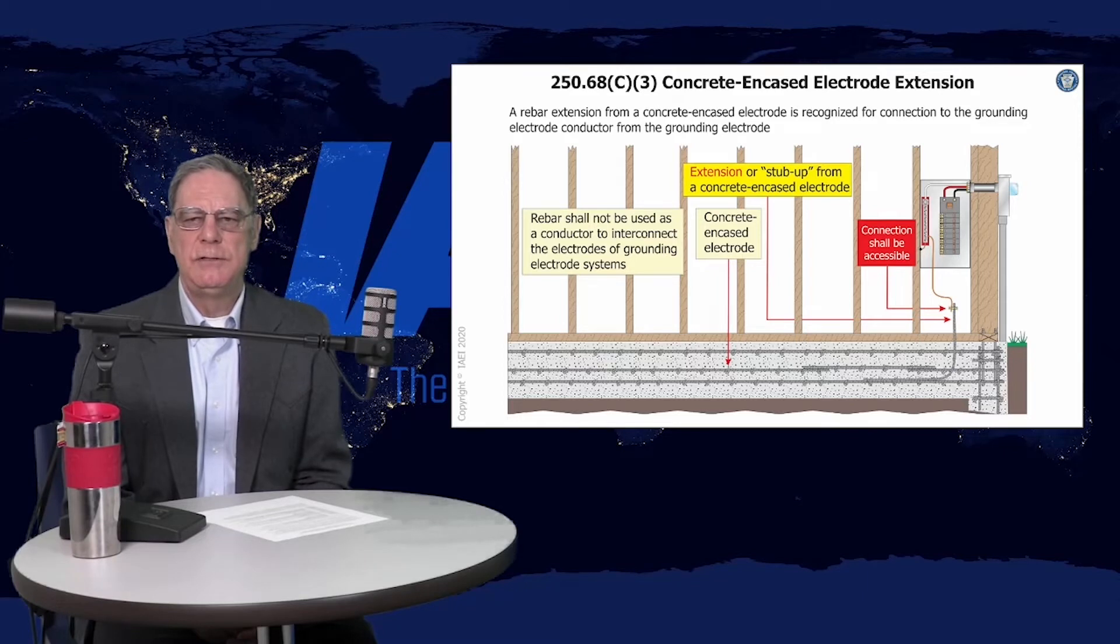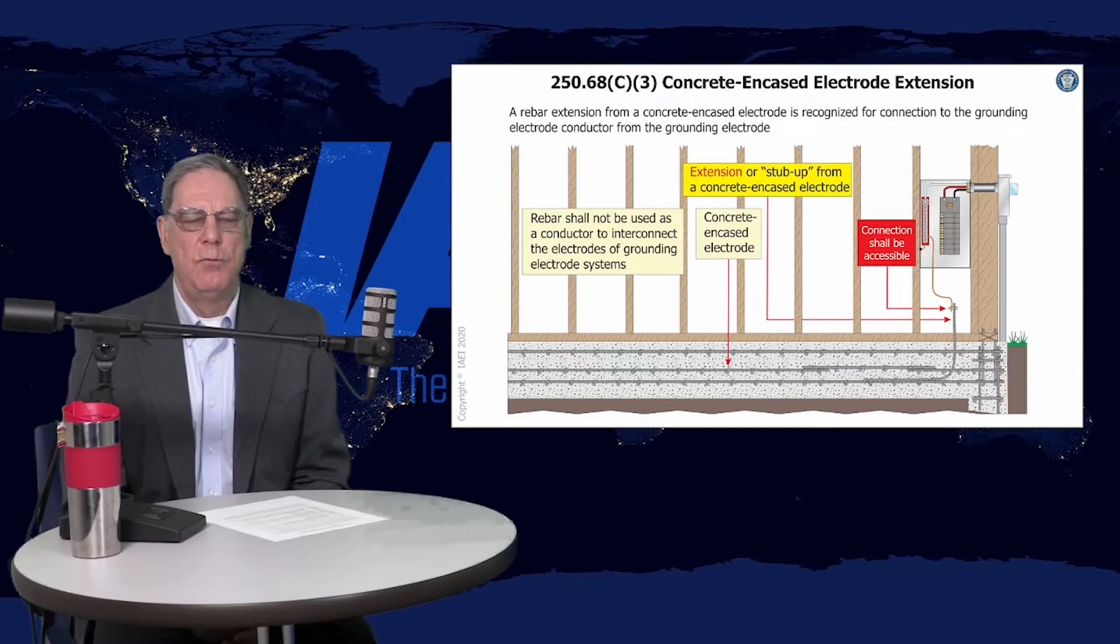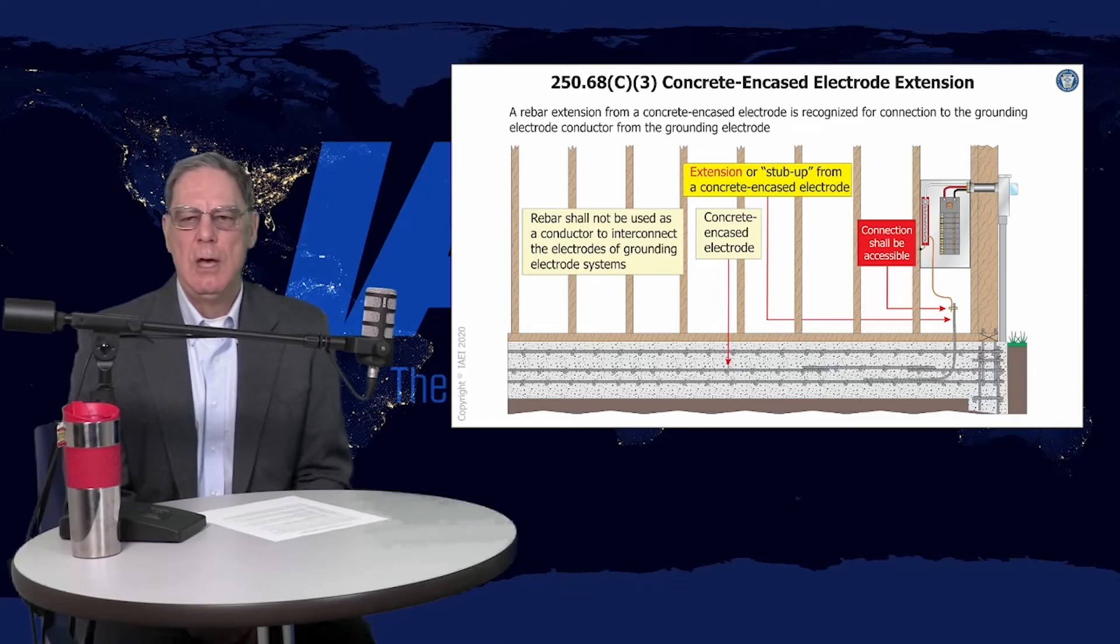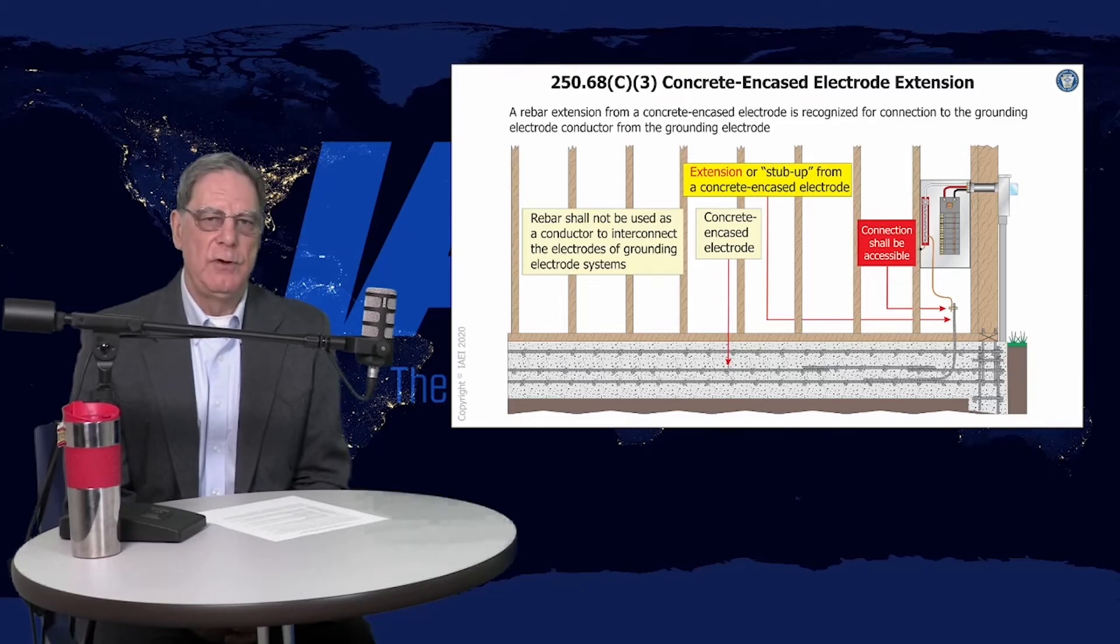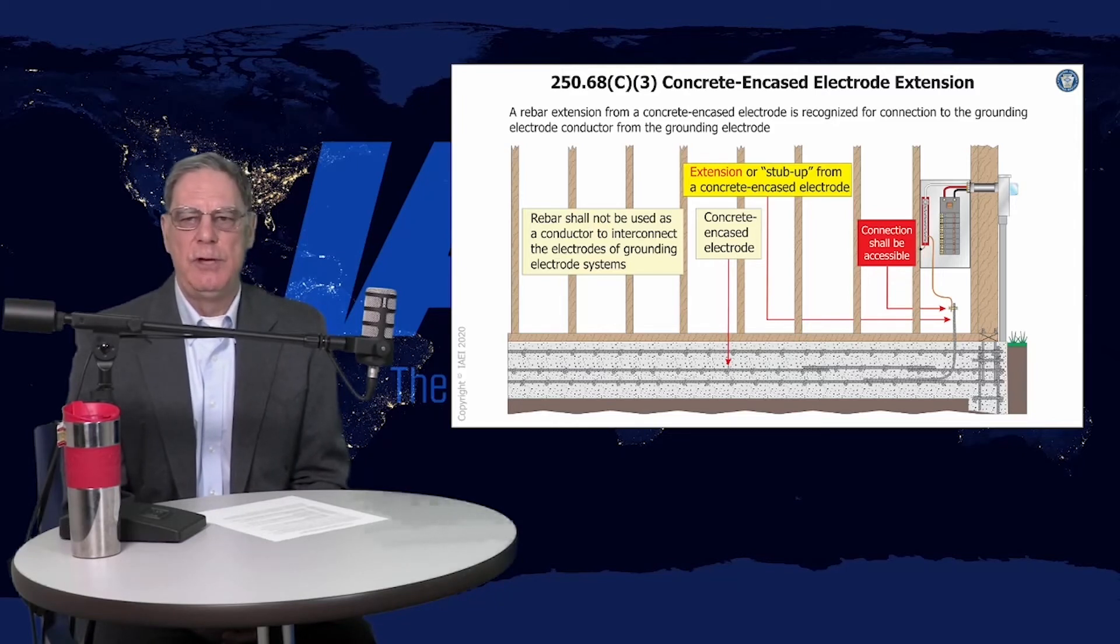One of the things you'll find common, and this came into the code a few cycles back, is having that rebar stub up. We used to say where the concrete encasement was available, it had to be used. The argument was, well, the foundation's already poured, rebar's already covered, it's not available. It's not really a good excuse, but it's an excuse being used. The code panel made the change to change the word available to present. So if it's present there in the footer foundation, it shall be used there.